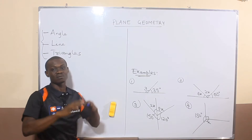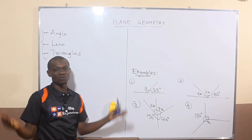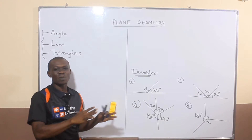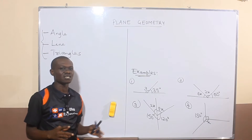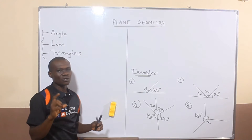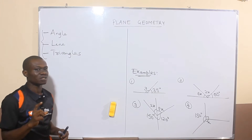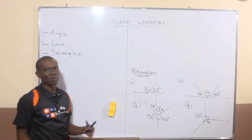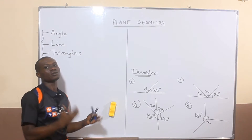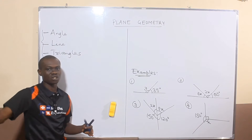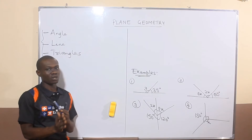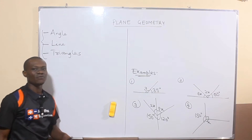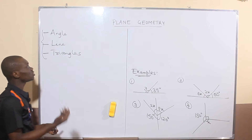I want you to understand that the concept of angles, plane geometry, and even circle geometry are actually the easiest parts of mathematics. If you don't take notice of or are not careful with the theorems or properties of these angles on different shapes, that's where it becomes complicated — but these are very easy things to handle.